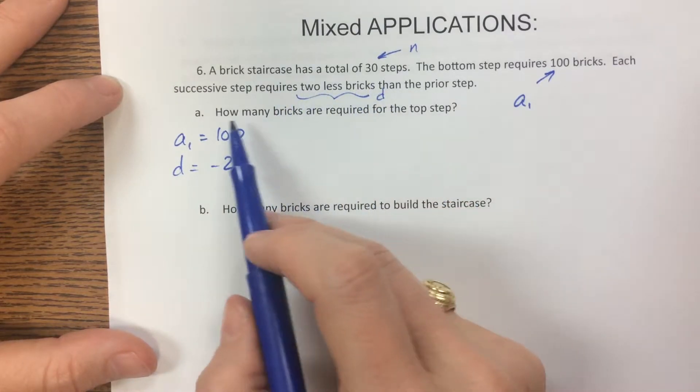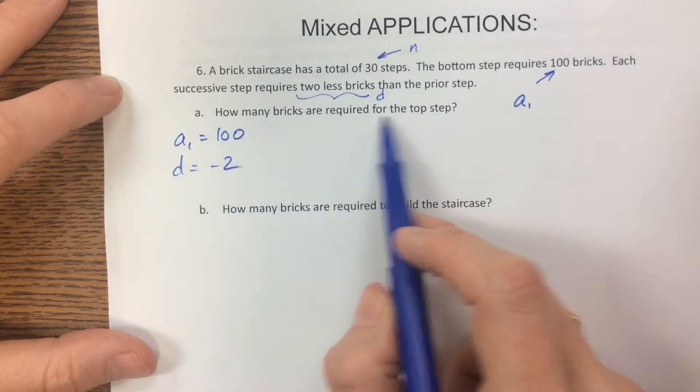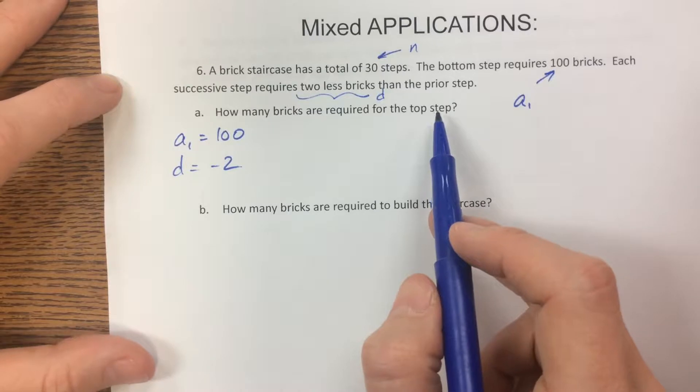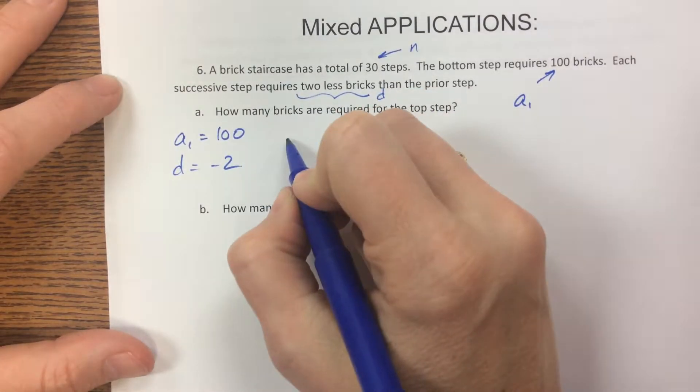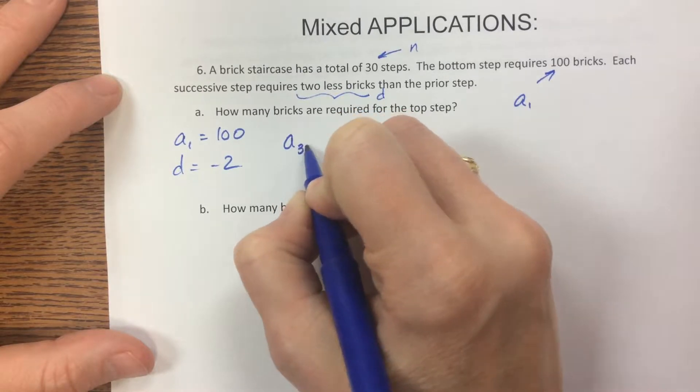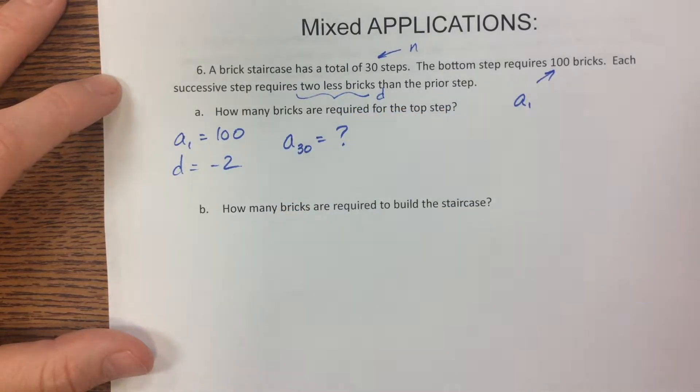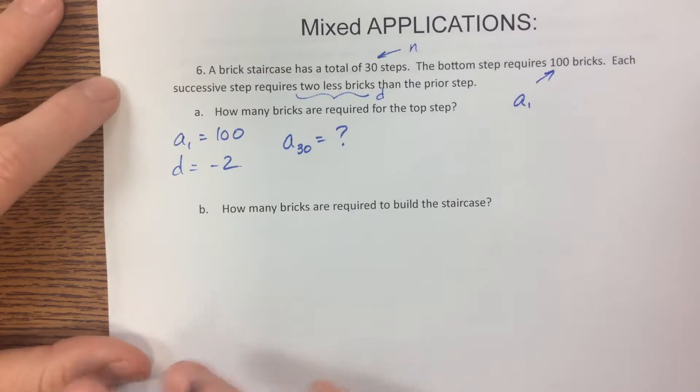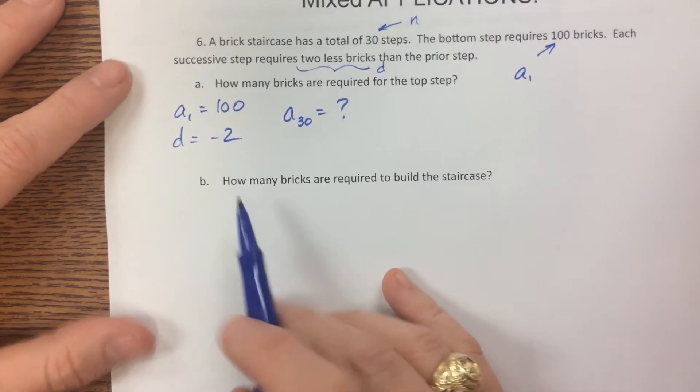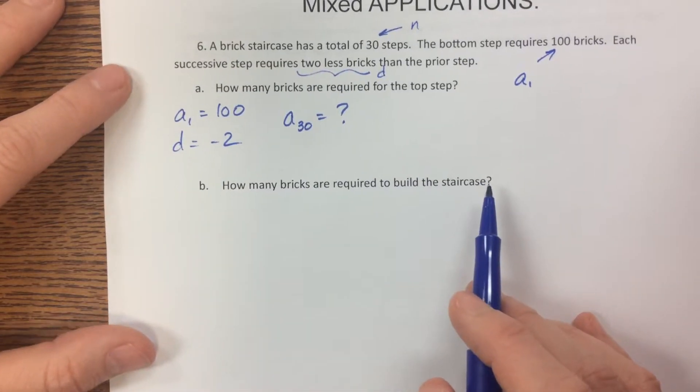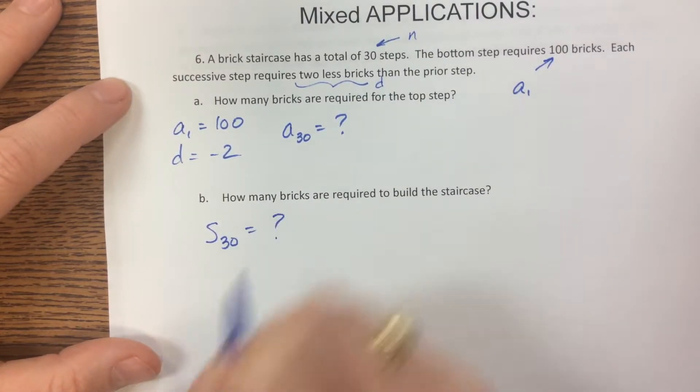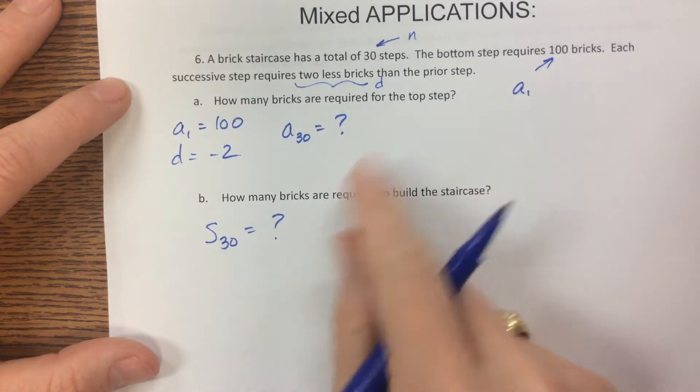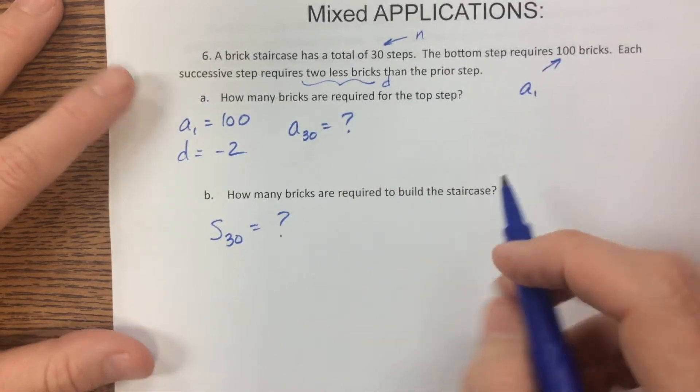And the first thing they're asking is how many bricks are required for the top step. So the thing you want to ask is am I looking for a sub n or s sub n? And I'm looking for a sub 30 is what I'm looking for. I want to know on that step how many bricks are in that step alone. You'll notice the next one, how many bricks are required to build the staircase, that's going to be the sum of those 30 steps. So make sure you're aware of the difference between these two. That trips kids up every year.